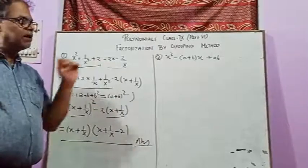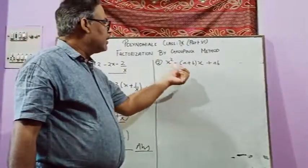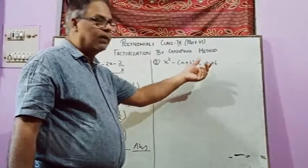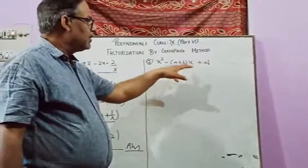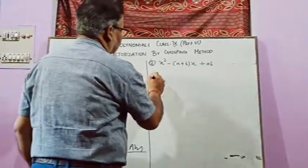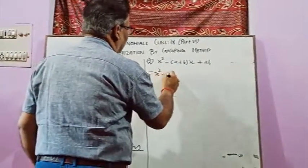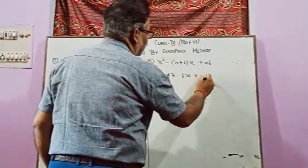The same method of grouping method is the second question, which we will tell you. x squared minus a plus b into x plus ab. We will solve this question. First, x is going to multiply this one. So we will get x squared minus ax and this is minus bx plus ab.